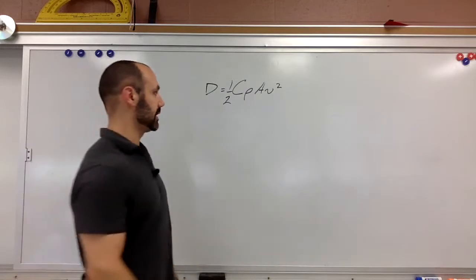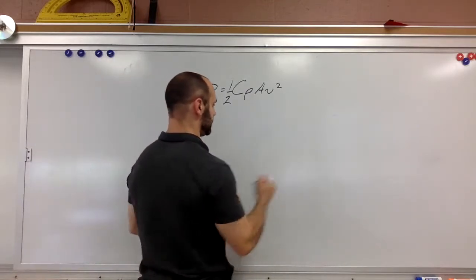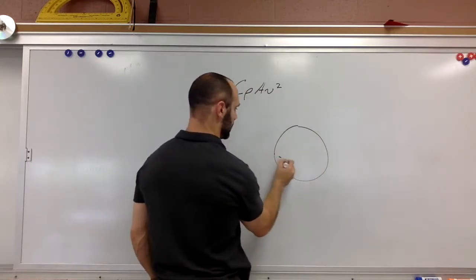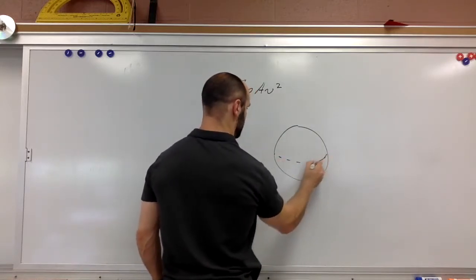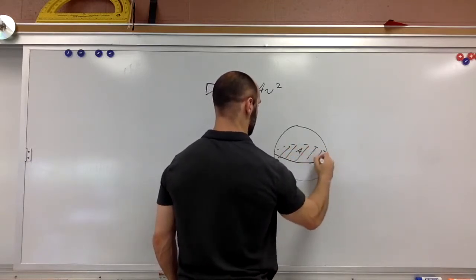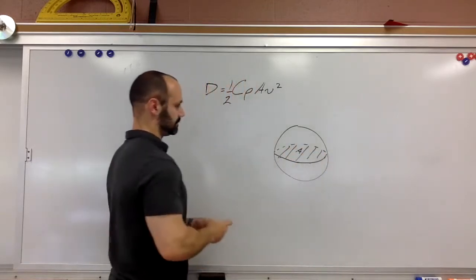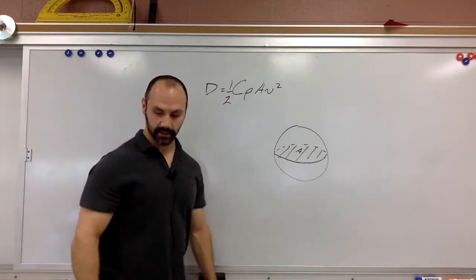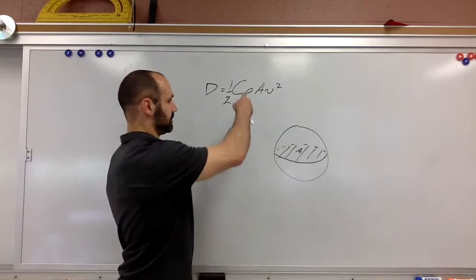And then A is the cross-sectional area of the object. So if we have something that's spherical that's falling, what we care about, A represents the area of this circle here as it's falling. That horizontal cross-sectional area. And then V obviously is the velocity.